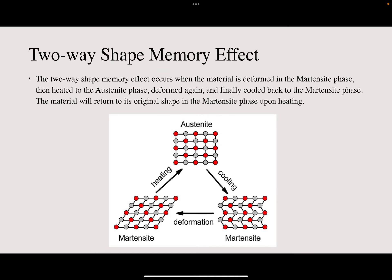Now, the two-way shape memory effect. The two-way shape memory effect occurs when the material is deformed in the martensite phase, then heated to the austenite phase, deformed again, and finally cooled back to the martensite phase. The material will return to its original shape in the martensite phase upon heating.